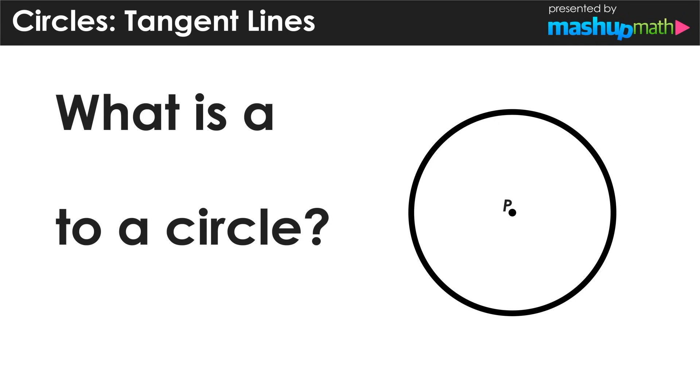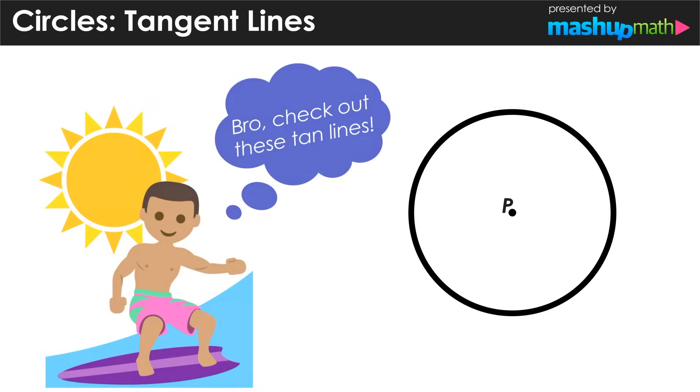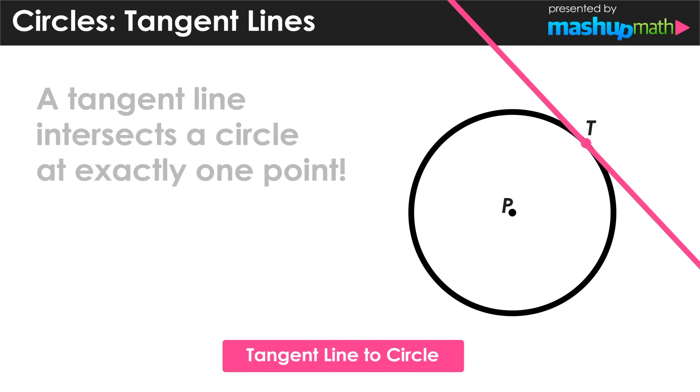So let's start with the question, what is a tangent line to a circle? Let's take a look at a circle with a center at point P. And let's also imagine another point on the circle, and we'll call that point T. A tangent line to a circle is a line that intersects the circle at exactly one point, in this case, our point T.